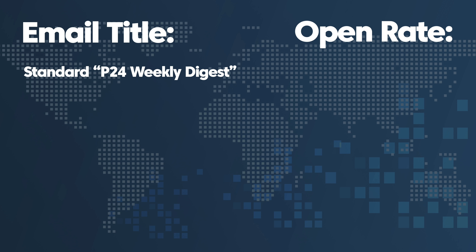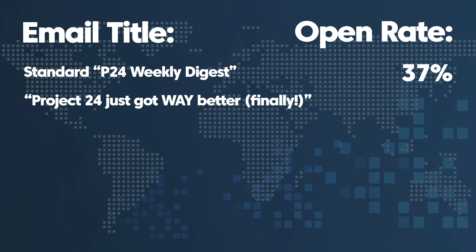In this video we're going to help you with titles. We have a weekly digest email that goes out to Project 24 members, and this subject line is normally 'P24 Weekly Digest' with an average open rate of about 37%. For this last week we decided to do a split test, and some of the audience got an email titled 'Project 24 Just Got Way Better Finally' — and instantly got a nine percent higher open rate.